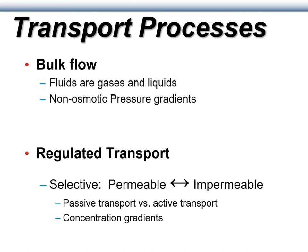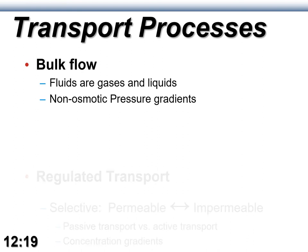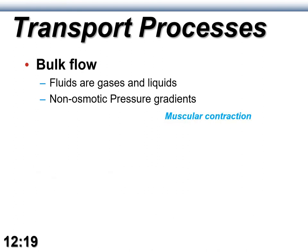In addition to diffusion and osmosis, which are passive processes, we also have other forms of transport — most notably facilitated diffusion and protein-mediated transport, which we call regulated transport. There's also another category called bulk flow, where gases and liquids move in large amounts — milliliters or liters per hour. This is non-osmotic. Examples include muscular contraction, like when your heart squeezes and blood flows through the vasculature, and gravity-driven events like orthostatic hypotension when you stand up quickly and feel dizzy.